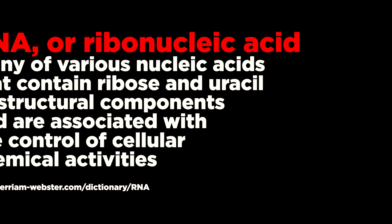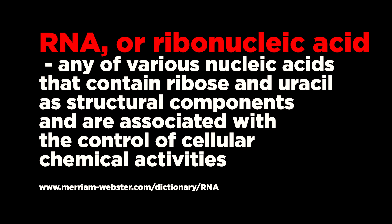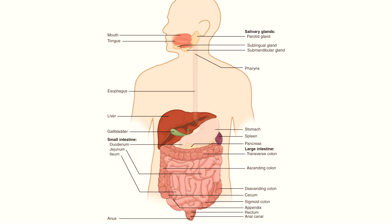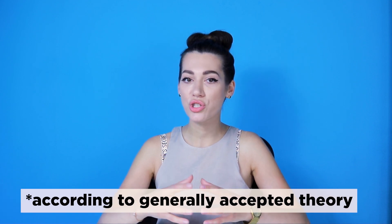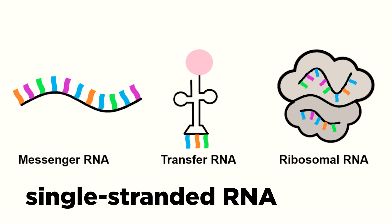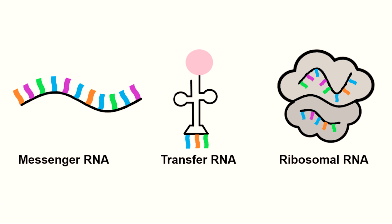Coronaviruses are RNA viruses infecting both humans and animals. This infection involves the respiratory, gastrointestinal, and central nervous system. The global COVID-19 pandemic is caused by Severe Acute Respiratory Syndrome Coronavirus 2 (SARS-CoV-2). The genome of COVID-19 is a single-stranded RNA, which is larger than any other RNA viruses.